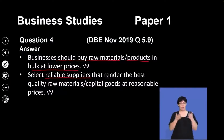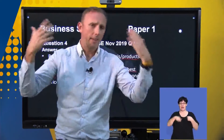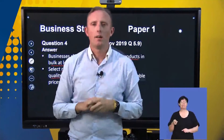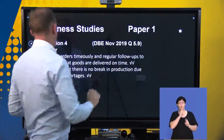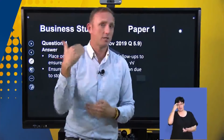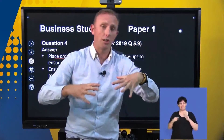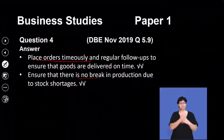We have to select reliable suppliers that render the best quality raw materials at reasonable prices. Rolls-Royce, for example, goes and buys leather from the best leather makers in the world because their product is all about quality. We have to place orders timeously to make sure that goods are delivered on time and we don't run out of goods — just think of ESKOM when they were running out of coal, leading to load shedding and its negative impact on the country. Ensure there's no break in production due to stock shortages.